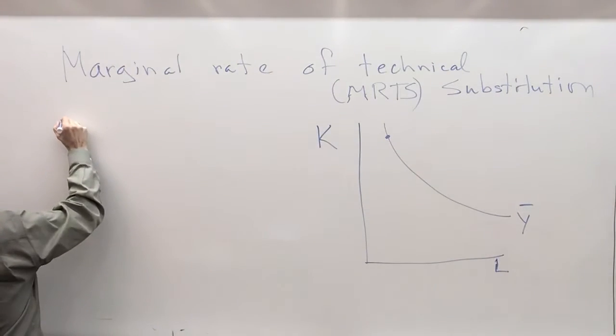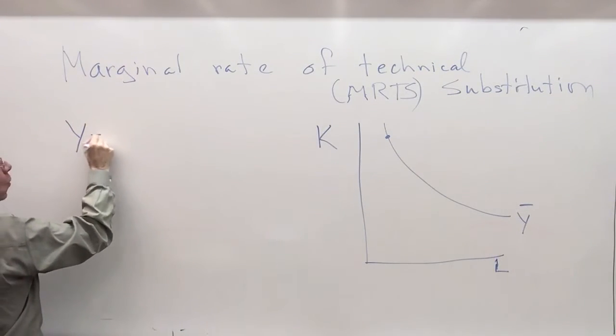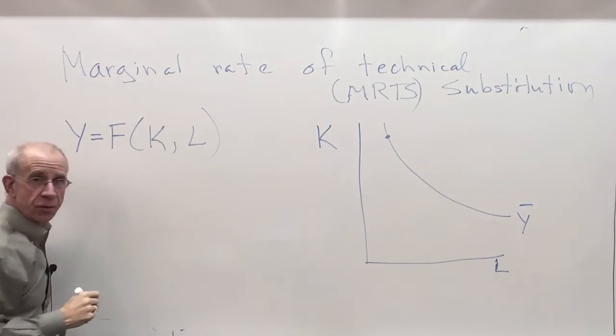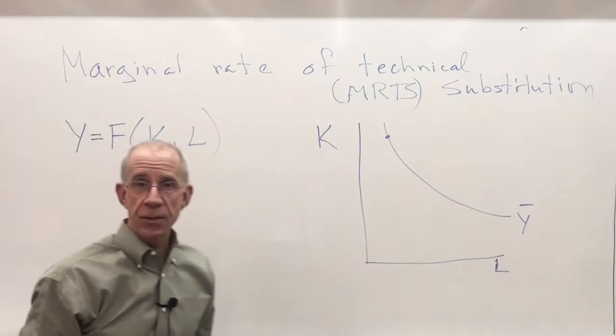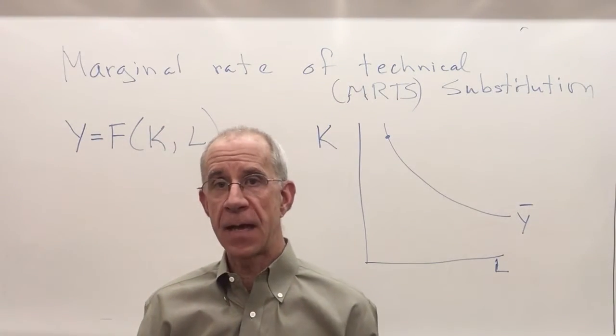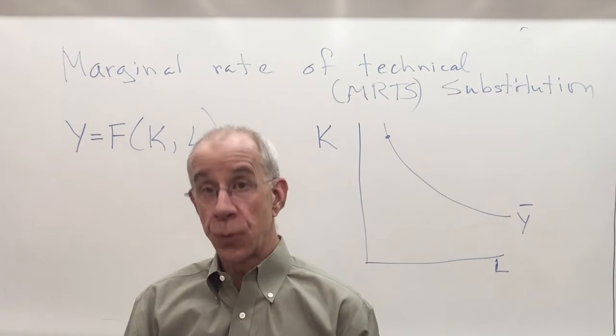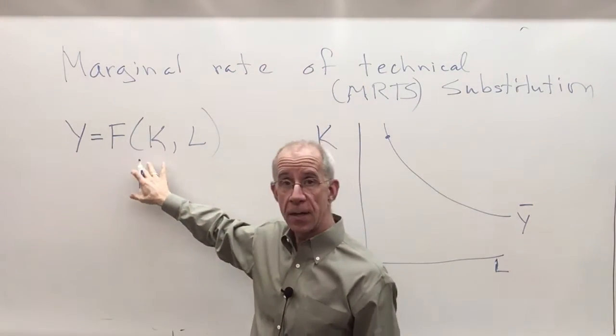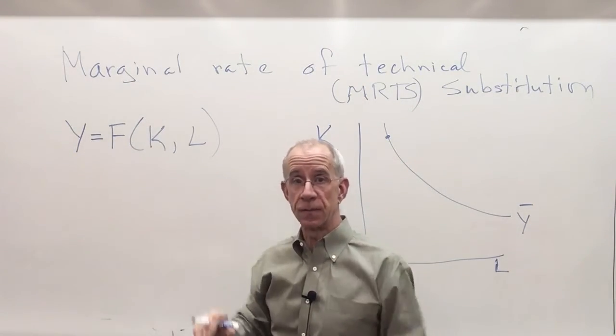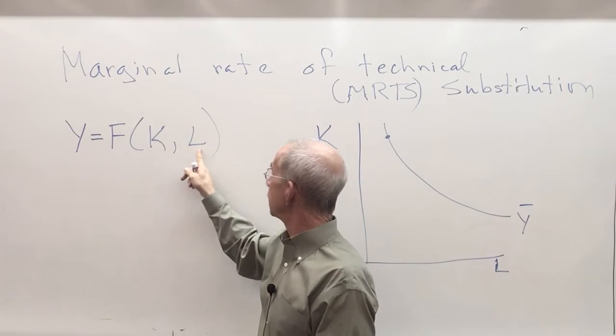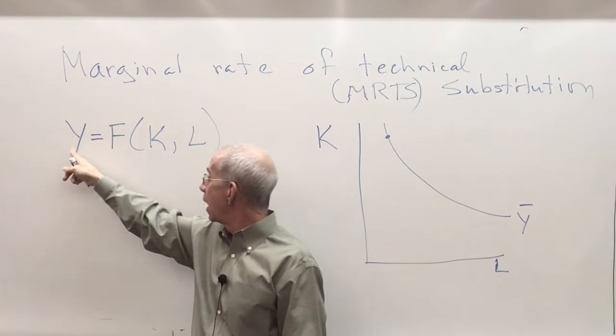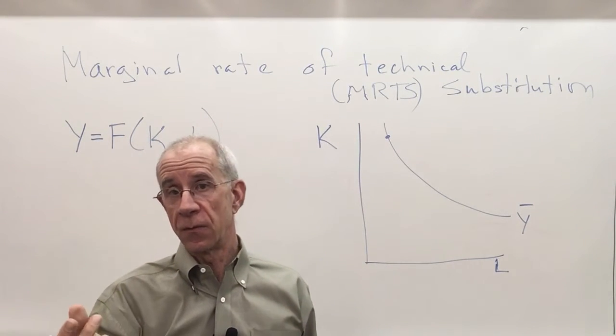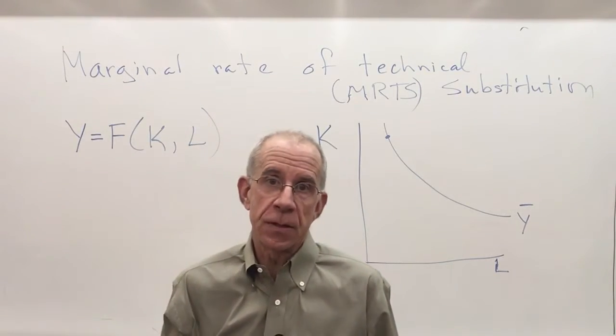And to do that we want to look at the underlying production function. We're imagining that the amount of output that can be produced using capital and labor with technology can be summarized with the production function. You give me a level of capital, you give me a level of labor, and I can tell you how much output you get through the use of technology, which is the production function itself.